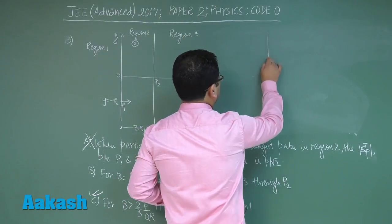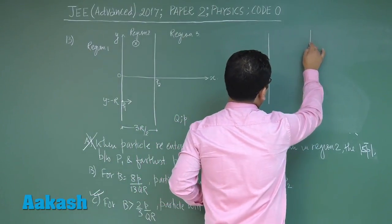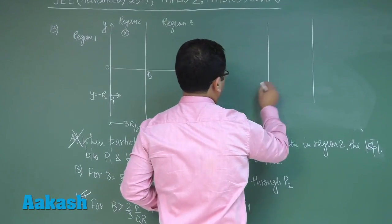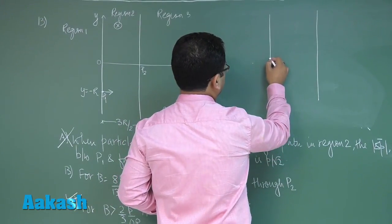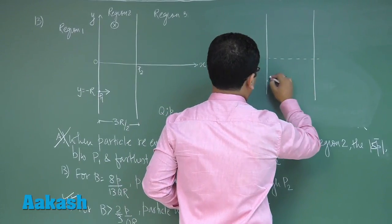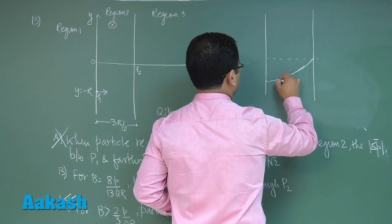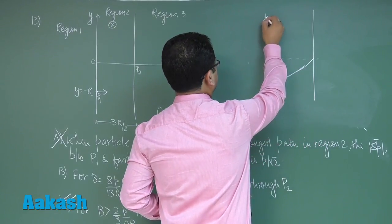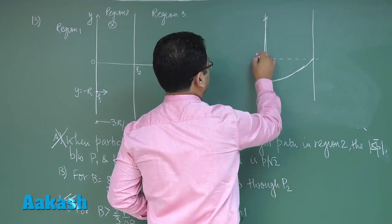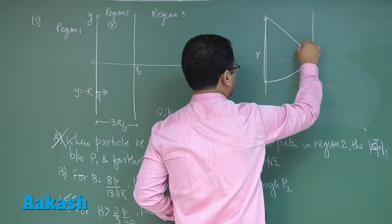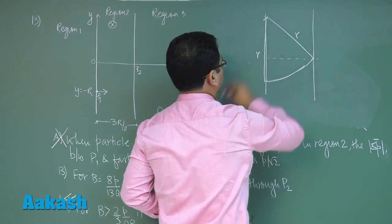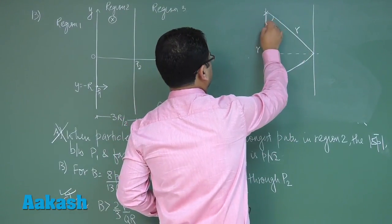I would rather take it in a different way. Let's assume it goes through p2. So in that particular situation if it goes through p2, this would be the situation. Here is the radius of the path and even this would be the radius of the path.